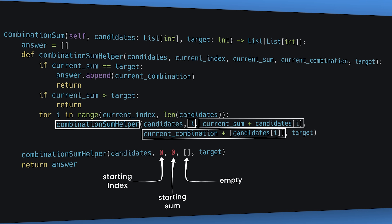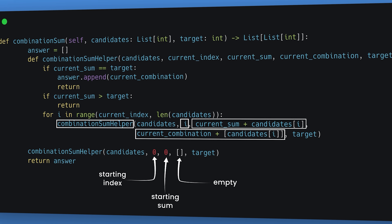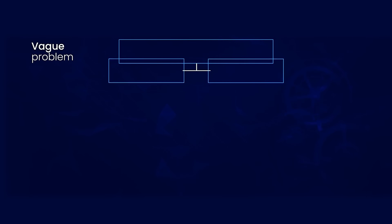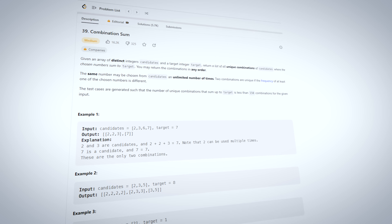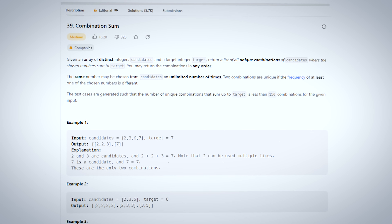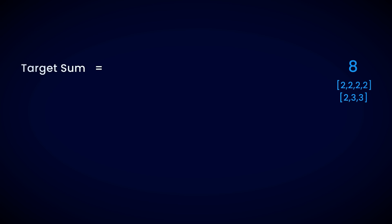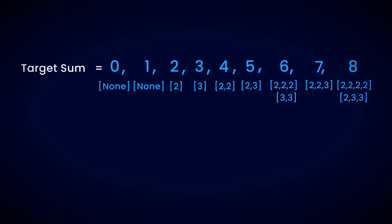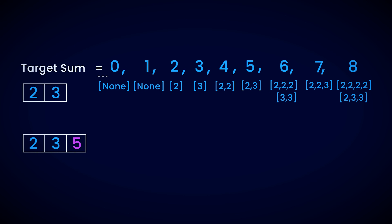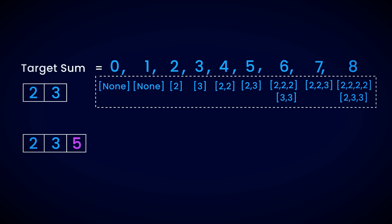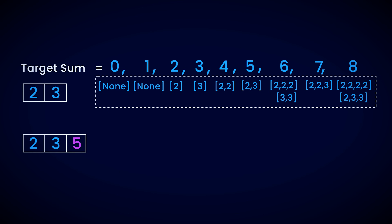At number 2, we have dynamic programming. In backtracking, we explore all possible solutions from scratch step by step. In dynamic programming, however, we are more thoughtful about the solutions we explore, and we do this by breaking the problem into smaller sub-problems. Using the combination sum problem again: the problem asks us to find all unique combinations that add up to the target sum. Imagine you already know all the combinations that add up to target, target minus 1, target minus 2, and so on, using all the given numbers except the last one. Now I give you the last number — can you use this information to find all unique combinations that add up to the target using all numbers including the last one?